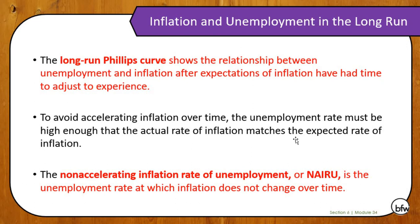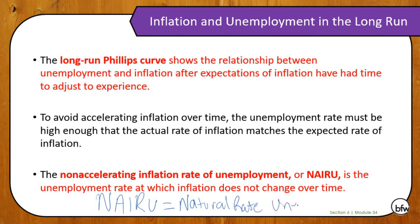The long run Phillips curve shows the relationship between unemployment and inflation after expectations of inflation have had time to adjust to experience. To avoid accelerating inflation over time, the unemployment rate must be high enough that the actual inflation rate matches the expected rate of inflation. We call this point the Non-Accelerating Inflation Rate of Unemployment, or NAIRU. NAIRU is the unemployment rate at which inflation does not change over time, and it is typically equal to the natural rate of unemployment. If we're there, our inflation rate is going to stay at 2% if we're at 5% unemployment.